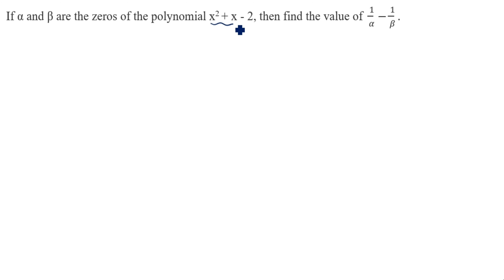In this question, minus 2 is given. If instead of minus 2, k is given, you will take the sum of the zeros and product of the zeros formula and solve the problem. In this question we will use two methods. The first method is splitting the middle term, and the second method uses the sum of the zeros formula and product of the zeros formula.